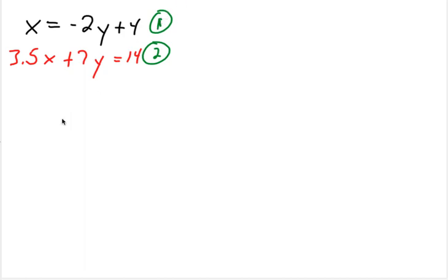So 3.5 times negative 2y plus 4, right? We're just replacing x with what we know it to be equal to.